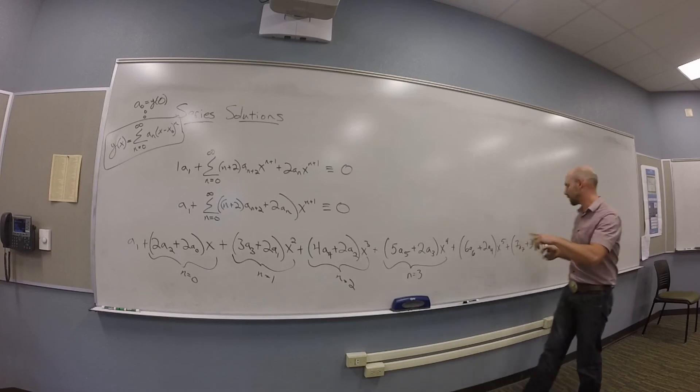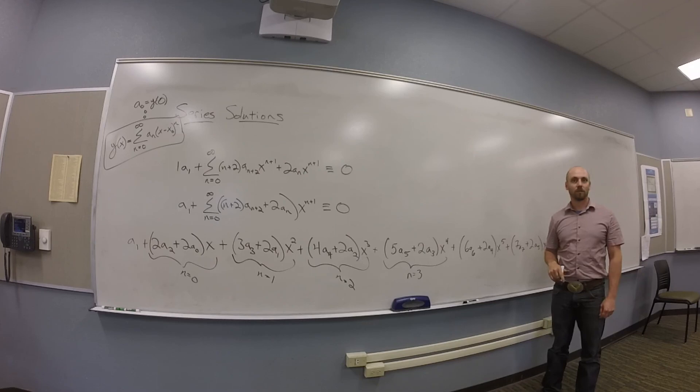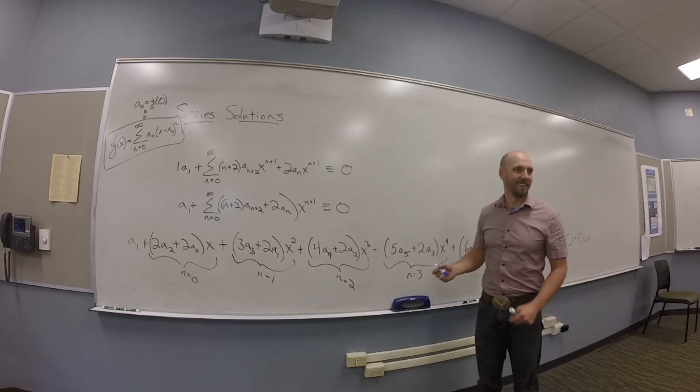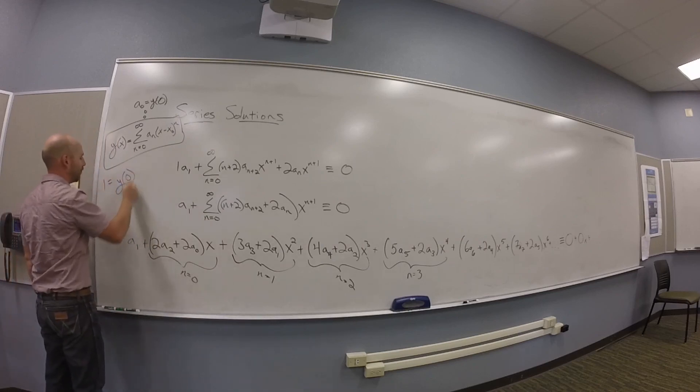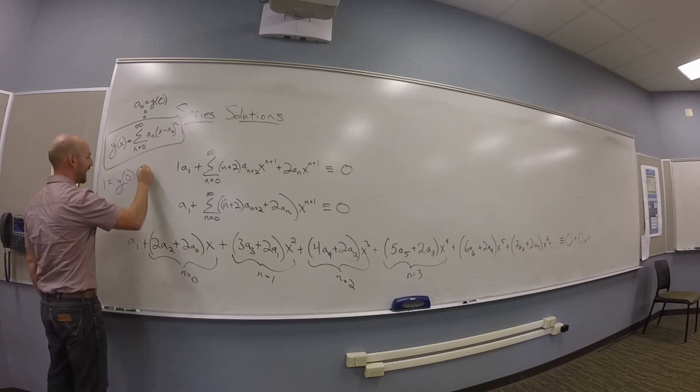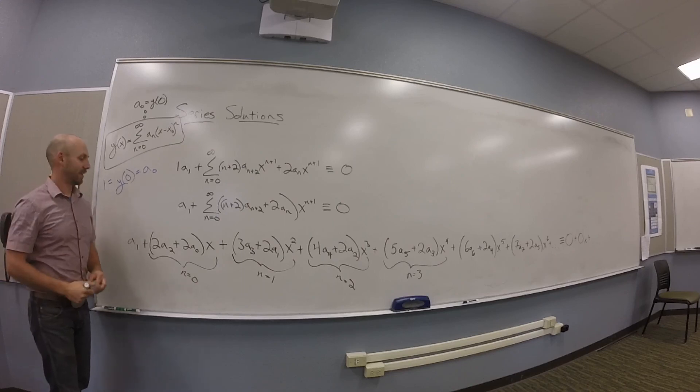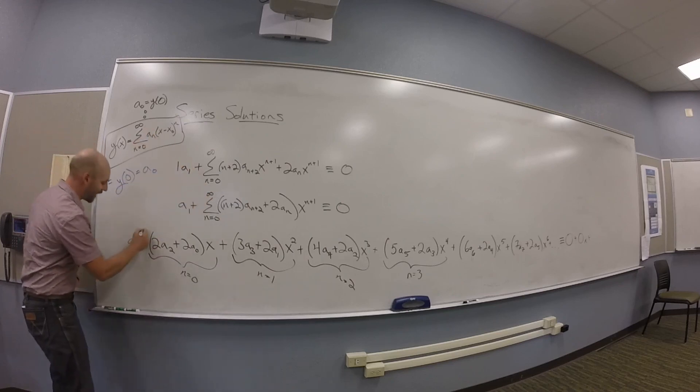So now if I make those relationships, because this is supposed to equal 0 plus 0x plus, and I know that a long time ago I had an initial condition which was that y of 0 is 1. So that told me about A0. So remembering to way back in the day, 1 was y of 0 and y of 0 is A0. You guys good with that? And then out of these, A1 has to be 0. So if that's 0.